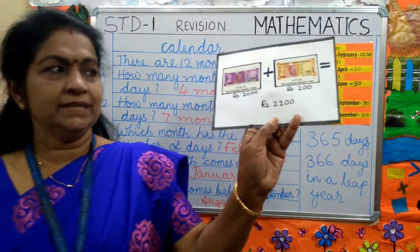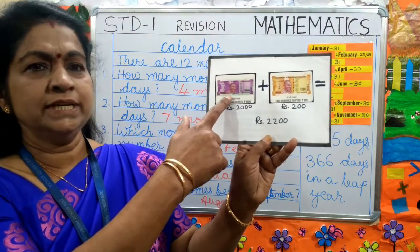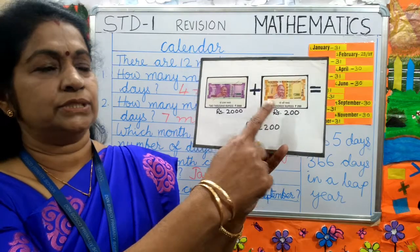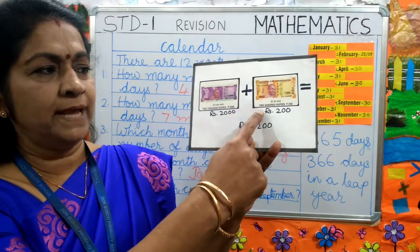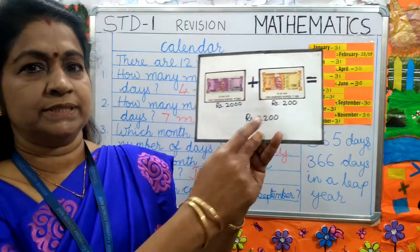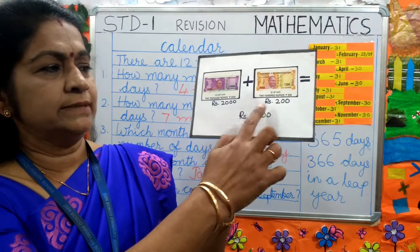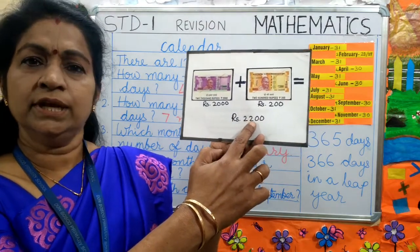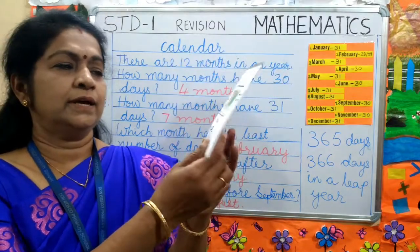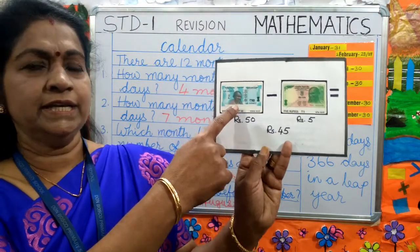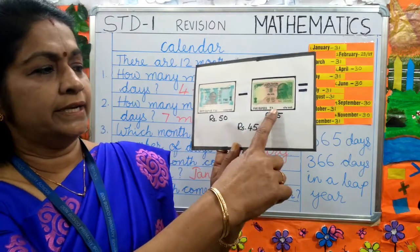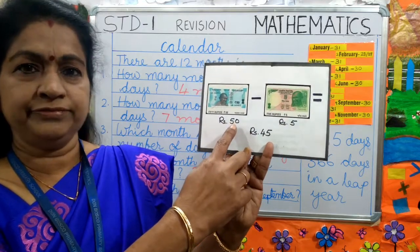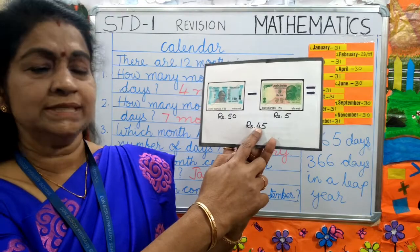Look here children. This is 2,000 rupees and here it is 200 rupees. You have to add 2,000 rupees plus 200 rupees. What will be the answer? 2,000 plus 200 is 2,200 rupees. Now here it is rupees 50 and here is rupees 5. You have to subtract rupees 5 from rupees 50. The answer is rupees 45.